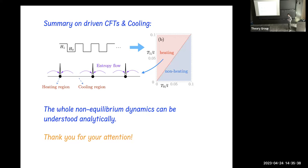The super-universality of the critical exponents arises because the driving Hamiltonian is entirely determined by the Virasoro algebra, so no specific information about the particular CFT enters. Only the Virasoro algebra — which is common to arbitrary CFTs — is needed, which is why the exponents are universal.